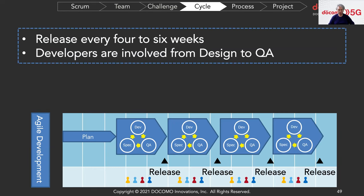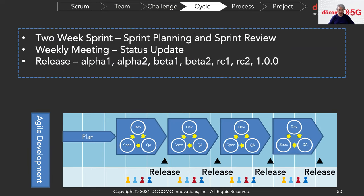Developers are involved from design to QA testing. In our case of a two-week sprint, we have sprint planning and a sprint review. We also have a weekly sync-up meeting for status updates and release milestones: Alpha 1, Alpha 2, Beta 1, Beta 2, RC 1, RC 2, and the official release such as 1.0.0. This is aligned to Drupal.org release management.